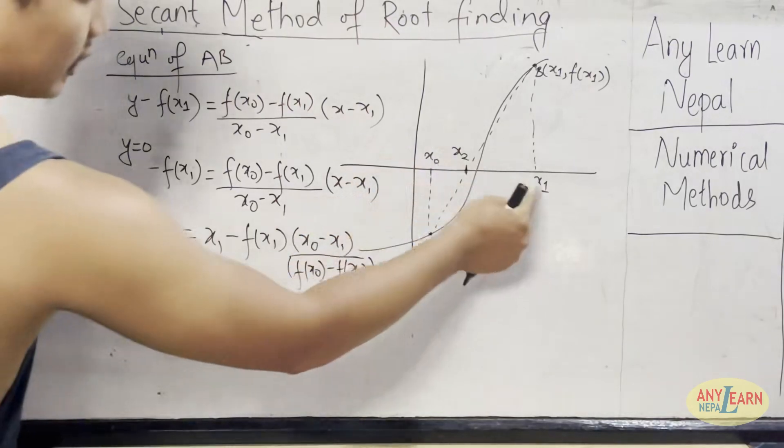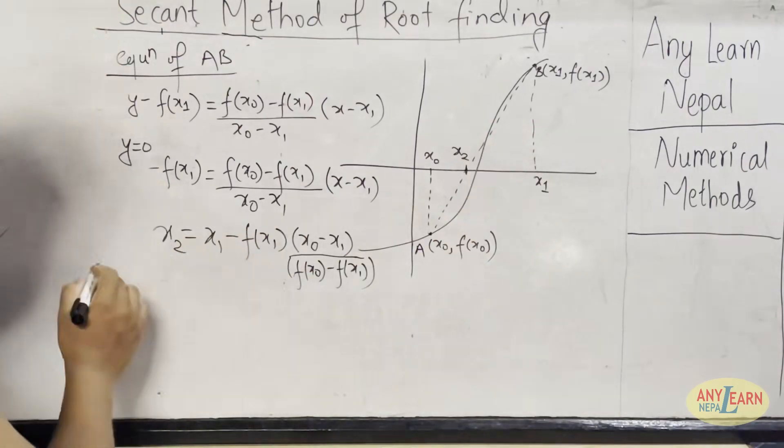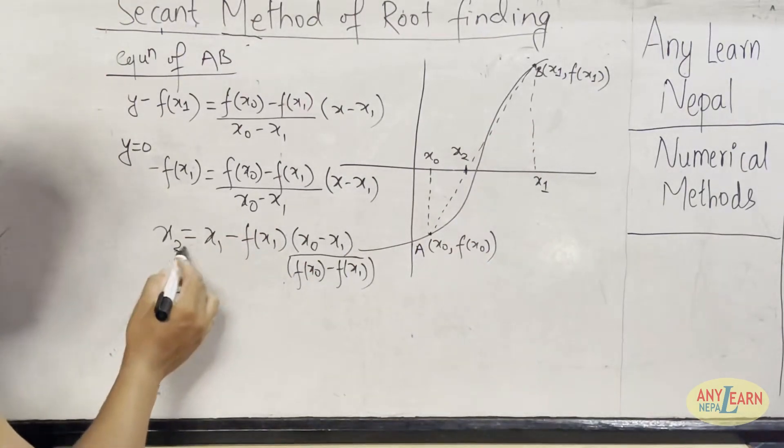Now this is the value of x2. Now using x2 and x1, we can get another value of x that will be x3. And similarly, we can write x3 equals...